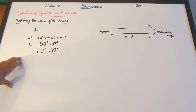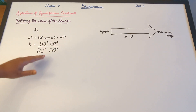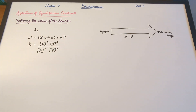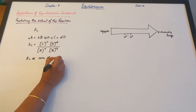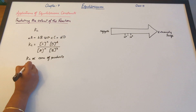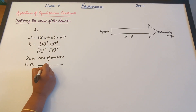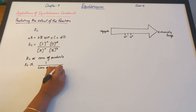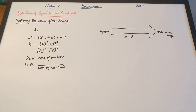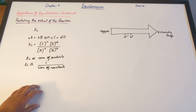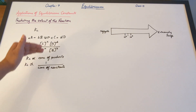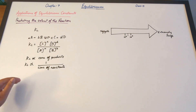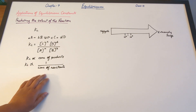From this equation you can see how the concentration of reactants and products are related to Kc. Kc is directly related to the concentration of the products, which means that when there is a high value of Kc it implies that the concentration of products are high. On the other hand, if there is a low value of Kc then the concentration of reactants are high.